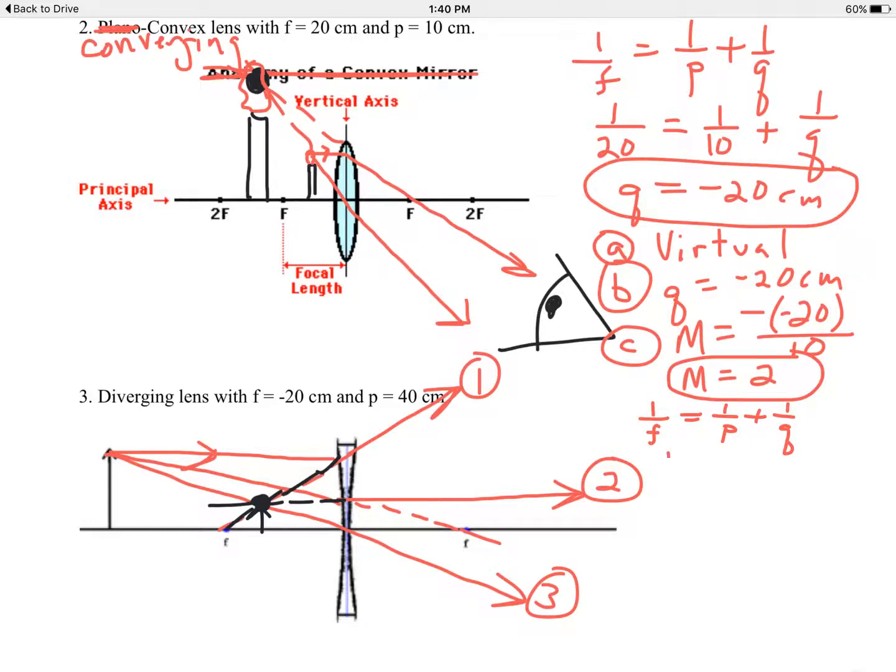Plugging in the numbers, 1 over negative 20. Make sure it's a negative 20 for a diverging lens. Even if they don't tell you it's a negative, for a diverging lens, it has to be negative. Negative 1 over 40 for the object location plus 1 over Q. Going to your calculator, Q comes out to be negative 13 centimeters.